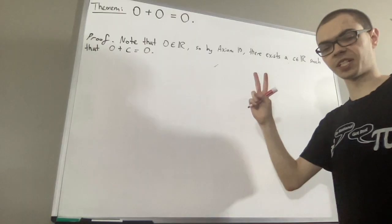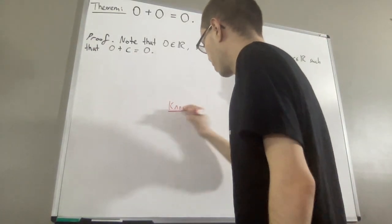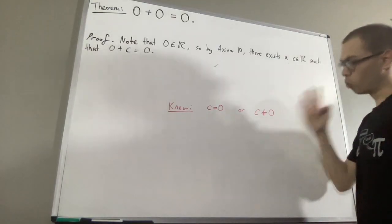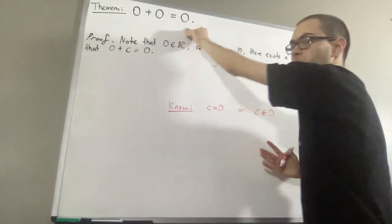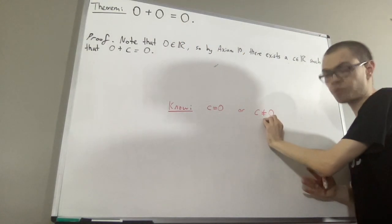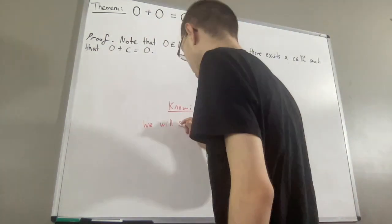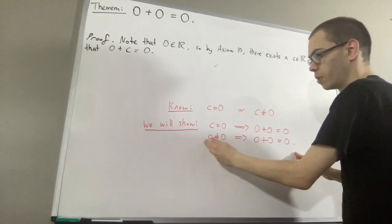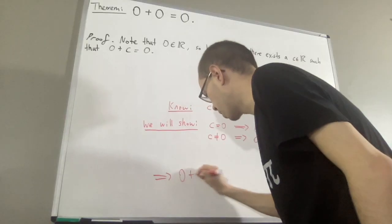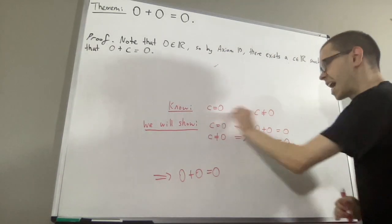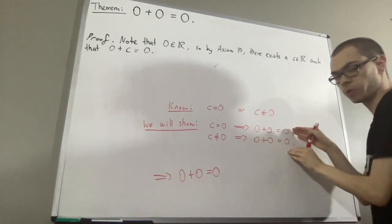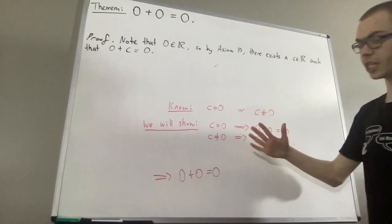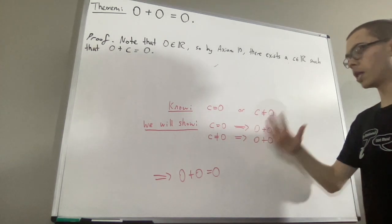From here, we're going to split this into two cases. We know that either c is equal to zero or c is not equal to zero. We're going to show that in either case, zero plus zero is equal to zero. By disjunction elimination, since one of these cases must be true and both lead to the same conclusion, we can conclude zero plus zero is equal to zero.